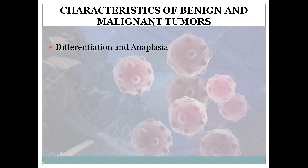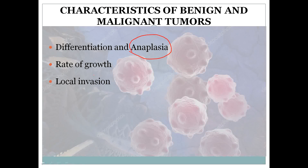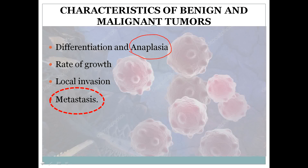The characteristics of benign and malignant tumors we have already discussed are differentiation and anaplasia. Benign tumors are well differentiated while malignant ones are least differentiated, showing characteristics of anaplasia — meaning to move backward. The rate of growth in malignant tumors is very fast while in benign tumors it is very slow. As far as local invasion is concerned, benign tumors do not invade locally, but malignant ones cause local invasion. The most important characteristic of all malignant tumors is metastasis.